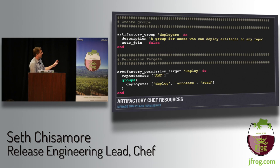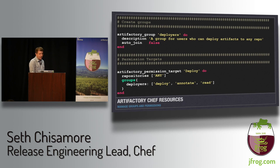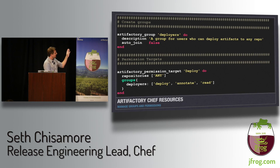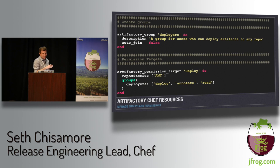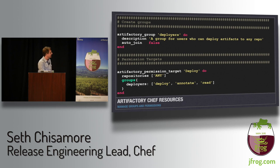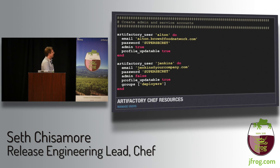Even if you don't know Chef or Ruby, you'll be able to tell what's happening. In this example we manage a group and some permissions. We create a group for the deployers and apply a permission target of 'deploy' to that group. The permission target has deploy, annotate, and read rights, but not delete rights — we don't want an artifact overwritten if CI tries to republish something already there. We'd rather have publishing systems fail on upload than destructively overwrite something.